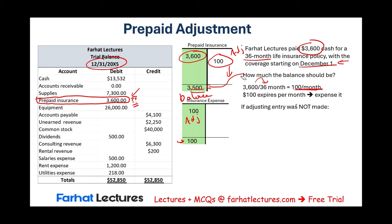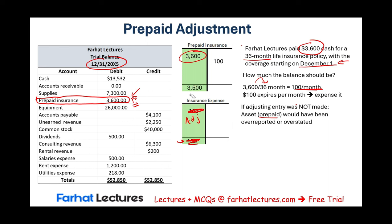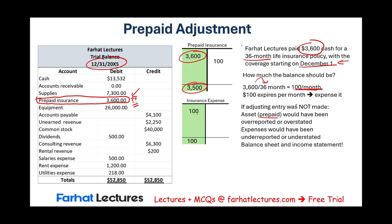What happens if this adjustment is not made? If we don't credit prepaid and don't debit insurance expense, the prepaid would be overreported at $3,600 instead of the correct $3,500, and expenses would be underreported — insurance expense would be zero instead of $100. In all adjusting entries, we always have a balance sheet account and an income statement account affected. The entry is: debit insurance expense, credit prepaid insurance for $100.